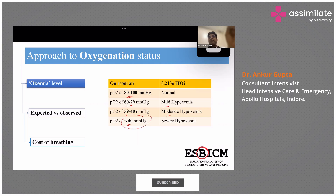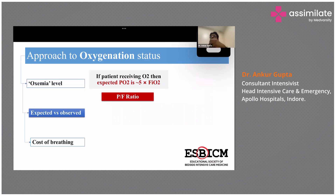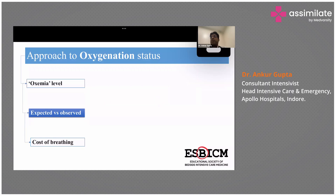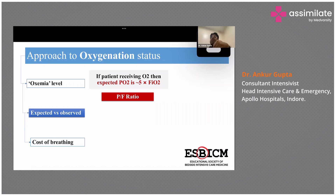After labeling, look at expected versus observed. You can remember by this simple formula: on room air we have 21 percent oxygen and our PO2 is 80 to 100, which is roughly five times the FiO2. So if you are giving 100 percent oxygen to a patient, you should expect a PO2 of around 500. If you're giving 40 percent FiO2, five times 40 is 200, so 200 PO2 is expected. If the PO2 is not in that five-times range, you should investigate the causes further.